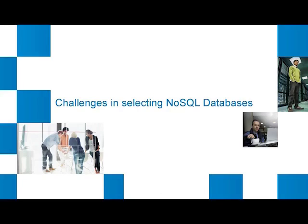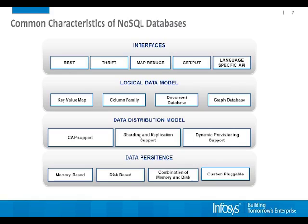Given these six use cases and this overall reference architecture, let us move to the next section: what are the challenges in selecting NoSQL databases? This is a common representation of characteristics of any NoSQL database — whether MongoDB, Cassandra, Couchbase, HBase, Voldemort, or whatever you want. These are the different layers around which they give their implementation.